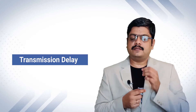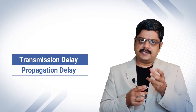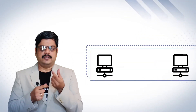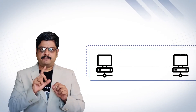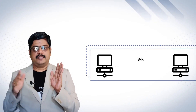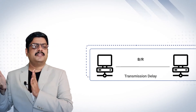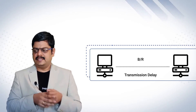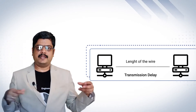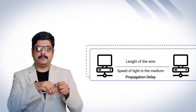Delays are configured in two types: transmission delay and propagation delay. Transmission delay means a delay in transmitting a packet on a particular link — transmitting a packet from A to B is called transmission delay. If B bits are sent in R seconds, then B divided by R is the delay in the link — B/R gives the number of packets per unit of time. Propagation delay happens due to various reasons, such as the length of the wire (because in a wired network, the length of the wire affects propagation delay) and the speed of light in the medium — whatever medium we are sending packets through.